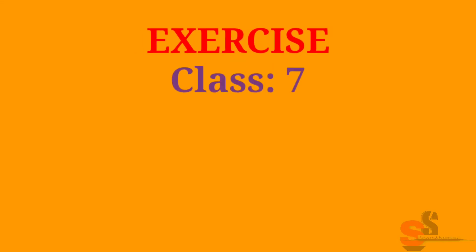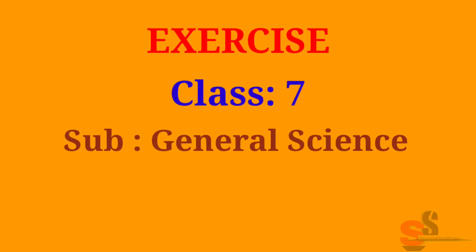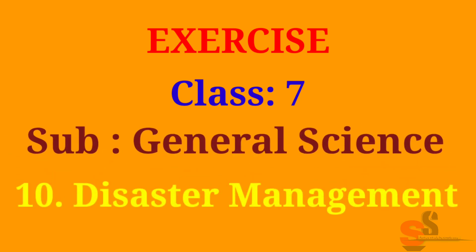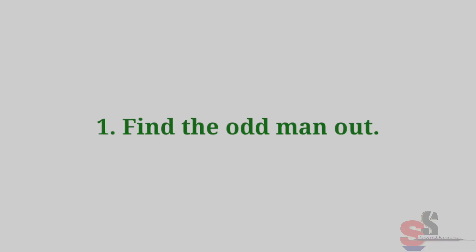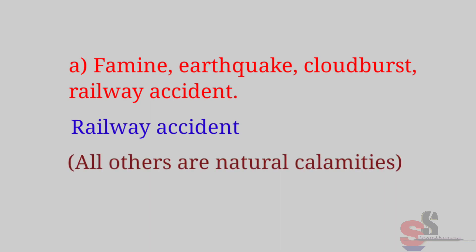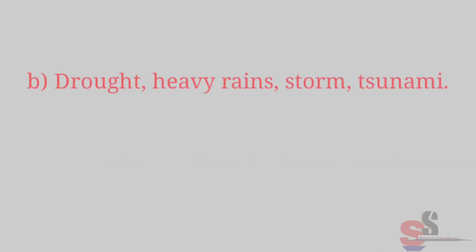Exercise Class 7, Subject: General Science, Chapter 10: Disaster Management. Question 1: Find the odd man out. A. Famine, earthquake, cloudburst, railway accident. The odd man out is railway accident, because all others are natural calamities.